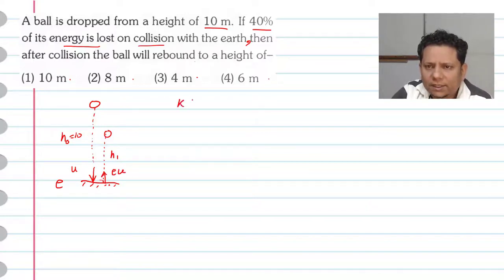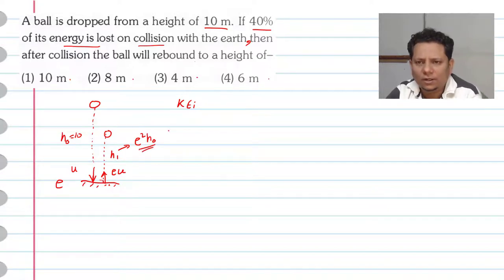This means that the height relationship is H1 equals e squared H0, where H0 is the original height.